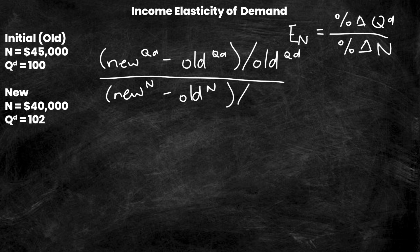I'm going to have all of this over new N minus old N over old N. Now I'm simply going to substitute in my values and see what we get. So new QD is right here, it's 102 minus old QD up here, which is 100, divided by 100, all over...